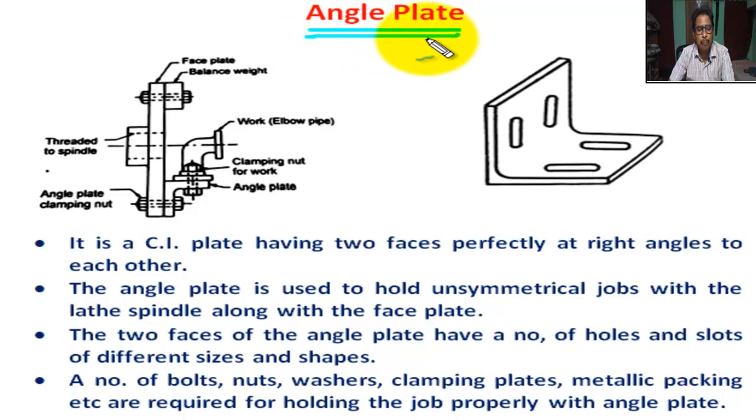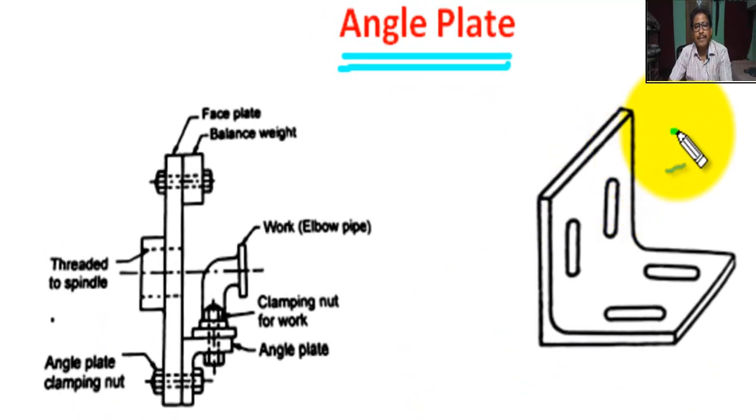What is the function of angle plate in lathe machine? This is the figure of angle plate. Angle plate is used for holding a job in combination with a face plate. When the size or shape of the job is such that it is not possible to hold the job directly on the face plate, then the angle plate is used with the face plate.